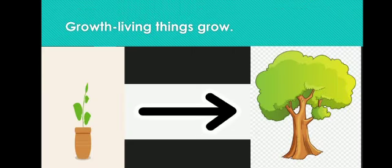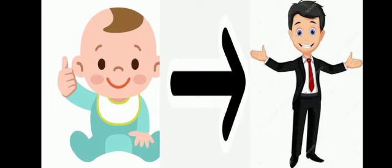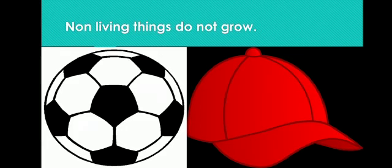The next difference is growth. Living things grow — the sapling grows into a tree, the baby grows into a man. Non-living things do not grow.